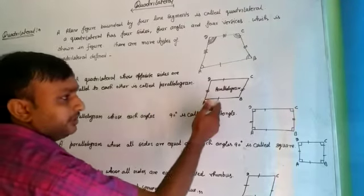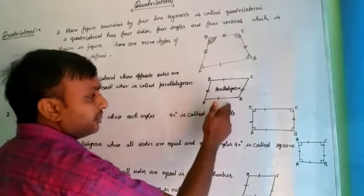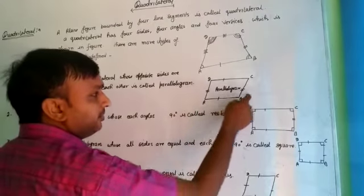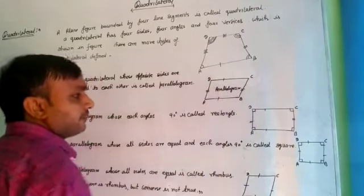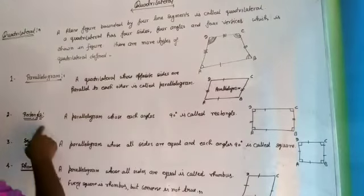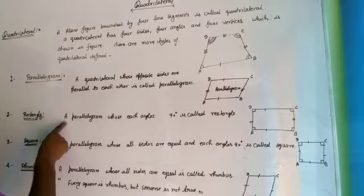The figure of a parallelogram is given — that is this type of figure A, B, C, D — a parallelogram. Next is rectangle.